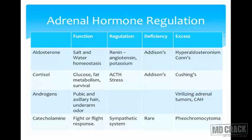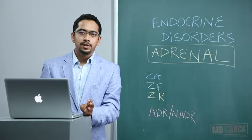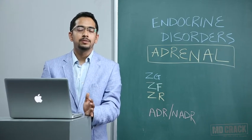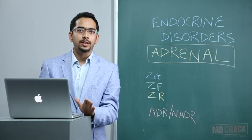Catecholamines are responsible for the fight-and-flight response and are under the control of the sympathetic system. Androgen deficiency is rare, and excess catecholamine secretion is seen in pheochromocytoma. Regarding testing the hypothalamo-pituitary-adrenal axis: aldosterone is not under pituitary control, so even if you have a pituitary lesion, cortisol will be affected and androgen secretion may be partly affected, but aldosterone or mineralocorticoid secretion is not affected.